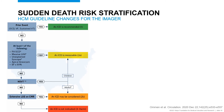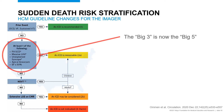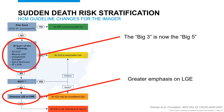Looking at how the ACC/AHA guidelines have changed compared to prior, the first box of major indications has grown from 3 to 5 criteria. Presence of apical aneurysm and left ventricular systolic dysfunction are new in the current guideline as big indications where an ICD is reasonable. The other major change is the inclusion of late gadolinium enhancement on cardiac MRI into this decision-making tree. Let's go through each of those three changes: apical aneurysm, left ventricular systolic dysfunction, and extensive late gadolinium enhancement.